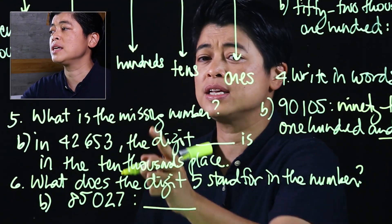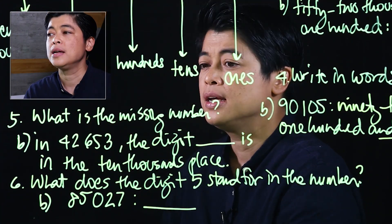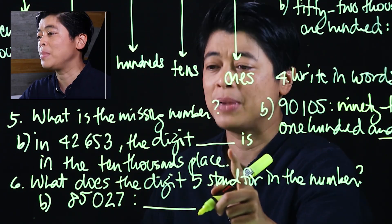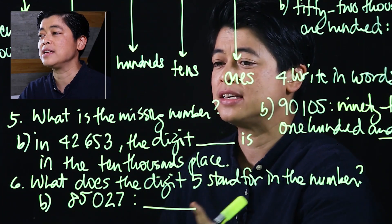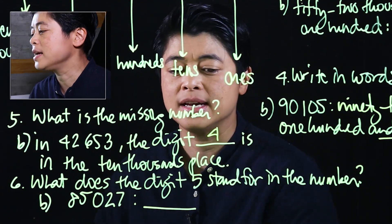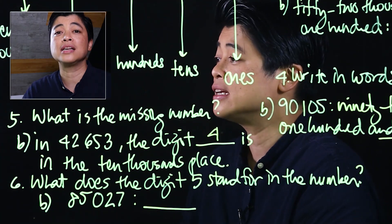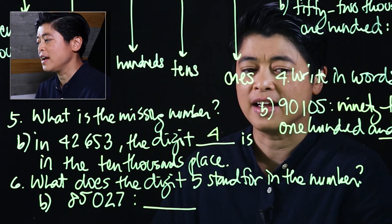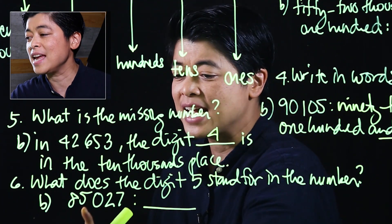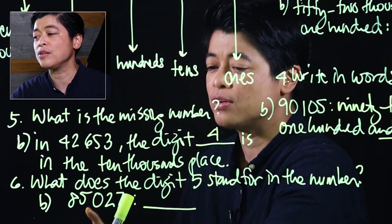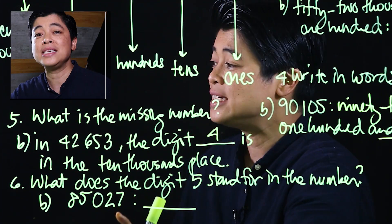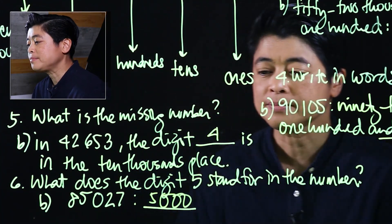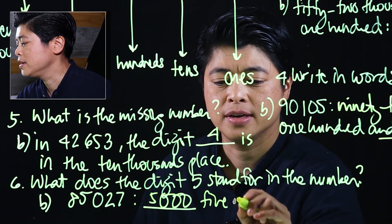Number 5 asks: what is the missing number in 42,653? The digit in the ten thousands place is 4. Finally, it asks what the digit 5 stands for in the number. Reading the number as 85,027, the 5 stands for five thousand.